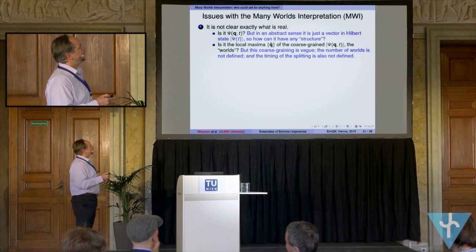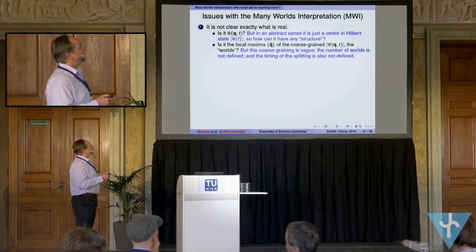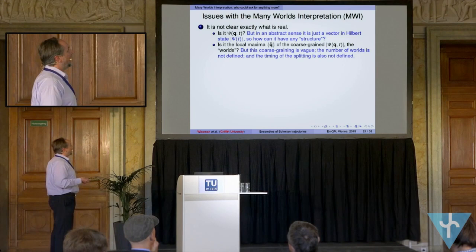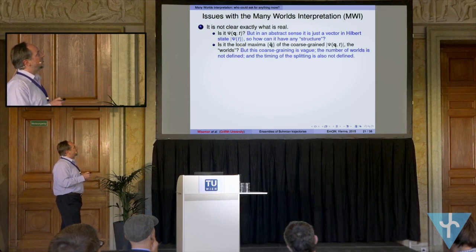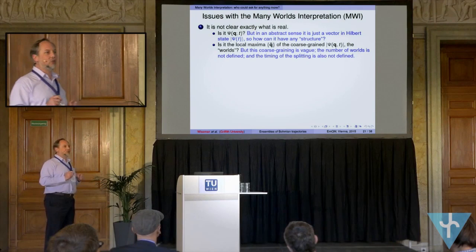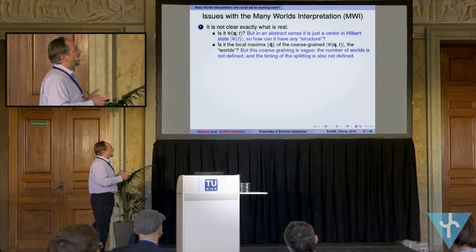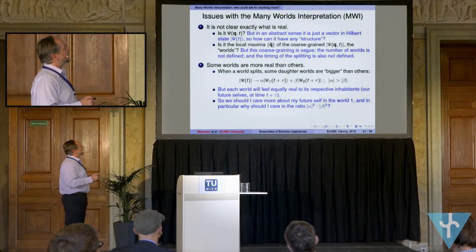So how can something just pointing in some vast-dimensional Hilbert space represent the world? How can it have any structure? Because all it does in this dynamics is just rotate around the Hamiltonian direction. On the other hand, you could say, let's look at configuration space, because that's where you can see all the structure in the many worlds. But then the question is, what exactly are you saying is real? If these maxima are real, well, how many maxima you have depends on exactly how you do this coarse-graining, and when they split will also depend on that — so it's all a bit vague. There's no definite ontology there.